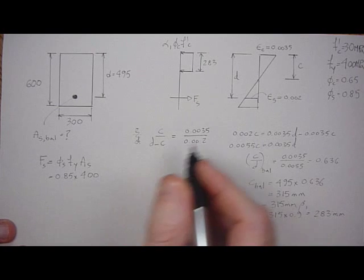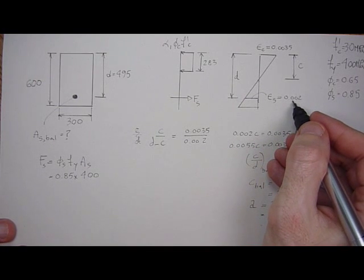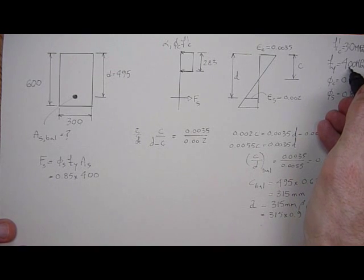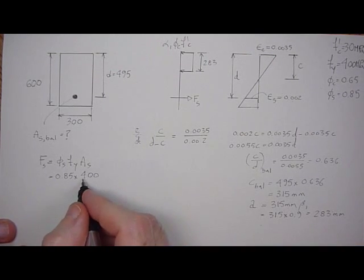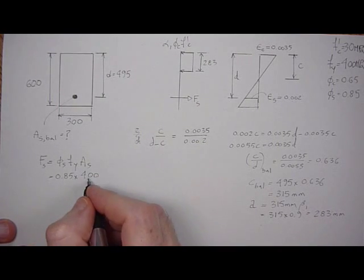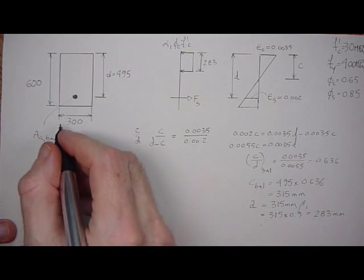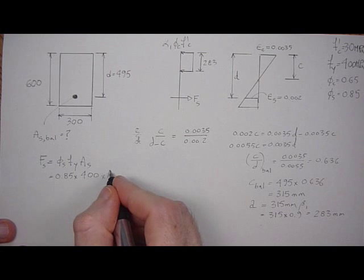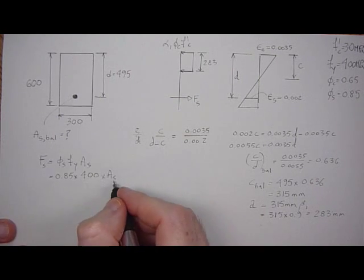We know it's 400 because that's at the strain of, that is the yield strain at failure, 400 MPa. So we're setting it right on the verge of failure, 400 MPa, times the area steel, which is an unknown. We're looking for area steel balance now.